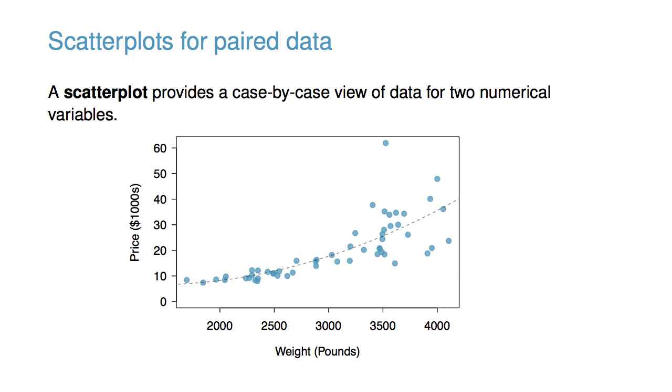A scatter plot provides a case-by-case view of data for two numerical variables. Scatter plots are especially helpful for quickly spotting associations relating variables.